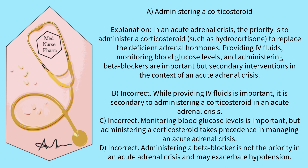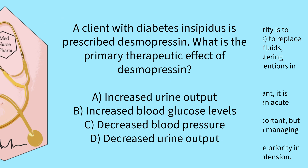In an acute adrenal crisis, the priority is to administer a corticosteroid, such as hydrocortisone, to replace the deficient adrenal hormones. Providing IV fluids, monitoring blood glucose levels, and administering beta blockers are important but secondary interventions in the context of an acute adrenal crisis.